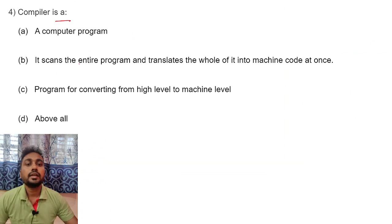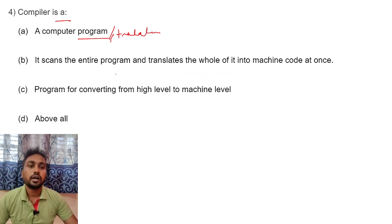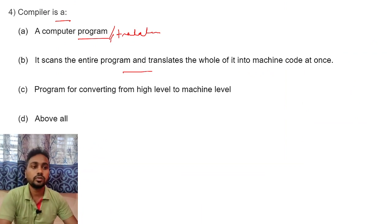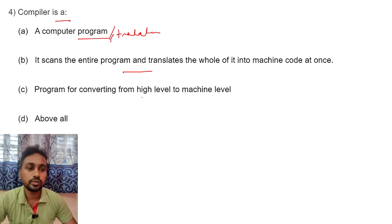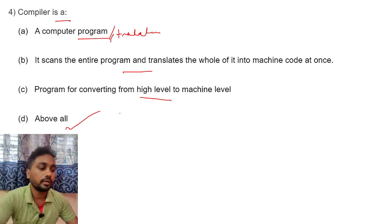Compiler — what is a compiler? In a computer, a compiler is a program, a computer program or a translator. It will scan the entire program and translate it into machine code at once. It converts high-level language to machine-level language. So all of the above is the correct answer about compiler.